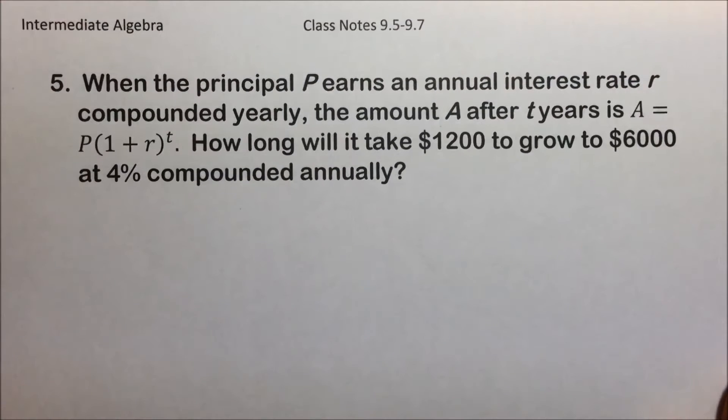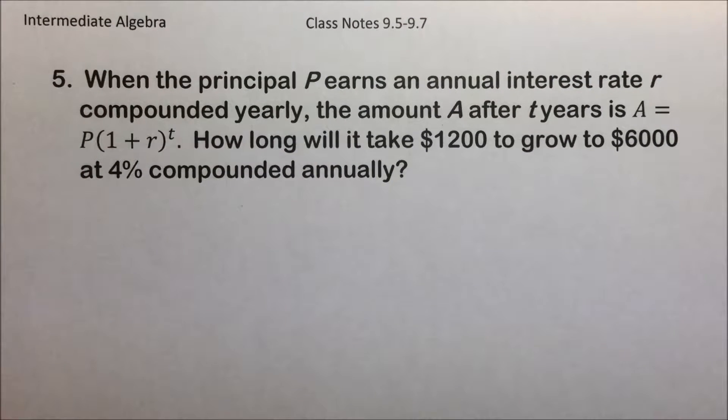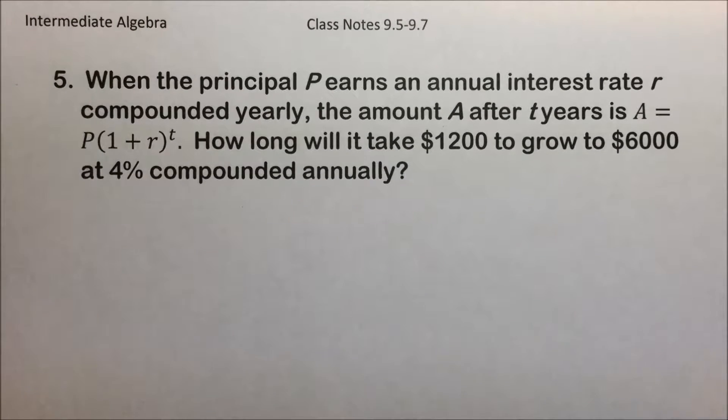In this next example from the financial world, when the principal P earns an annual interest rate r compounded yearly, the amount A after t years is given by A equals P times the quantity 1 plus r raised to the t power. How long will it take $1,200 to grow to $6,000 at 4% compounded annually?